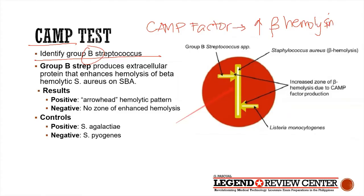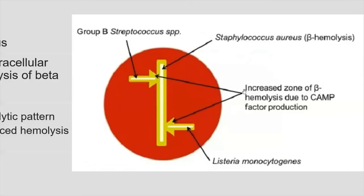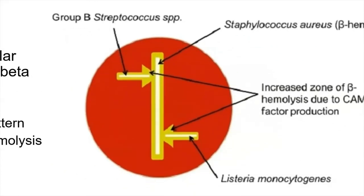Since Staph aureus produces beta-hemolysin, you will see clearing around those colonies. The unknown organism is streaked perpendicularly to Staph aureus and incubated at the same time. A positive result is enhancement of the hemolysis of Staph aureus, producing a characteristic arrowhead appearance. A negative result shows no enhancement — there is still hemolysis, but no enhancement. Note: Listeria monocytogenes also causes a positive CAMP test.